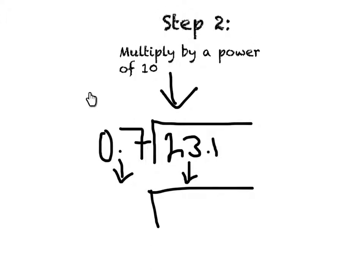Step 2 is to multiply by a power of 10. How do you make 0.7 a whole number? You could do 0.7 times 10 to the power of 1. That would be 10. Then you move the decimal point to the left and it would give us 7.